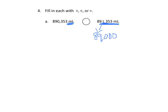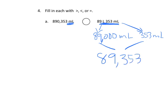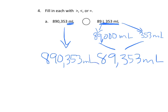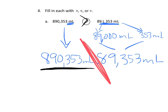So 89 liters is 89,000 milliliters plus the 353 milliliters that we already had. That gives us 89,353 milliliters. And then on the left side, we had 890,353 milliliters. And so we can see that the left side is way bigger than the right side. So our alligator is going to eat the left number, because 890,000 is way bigger than 89,000.